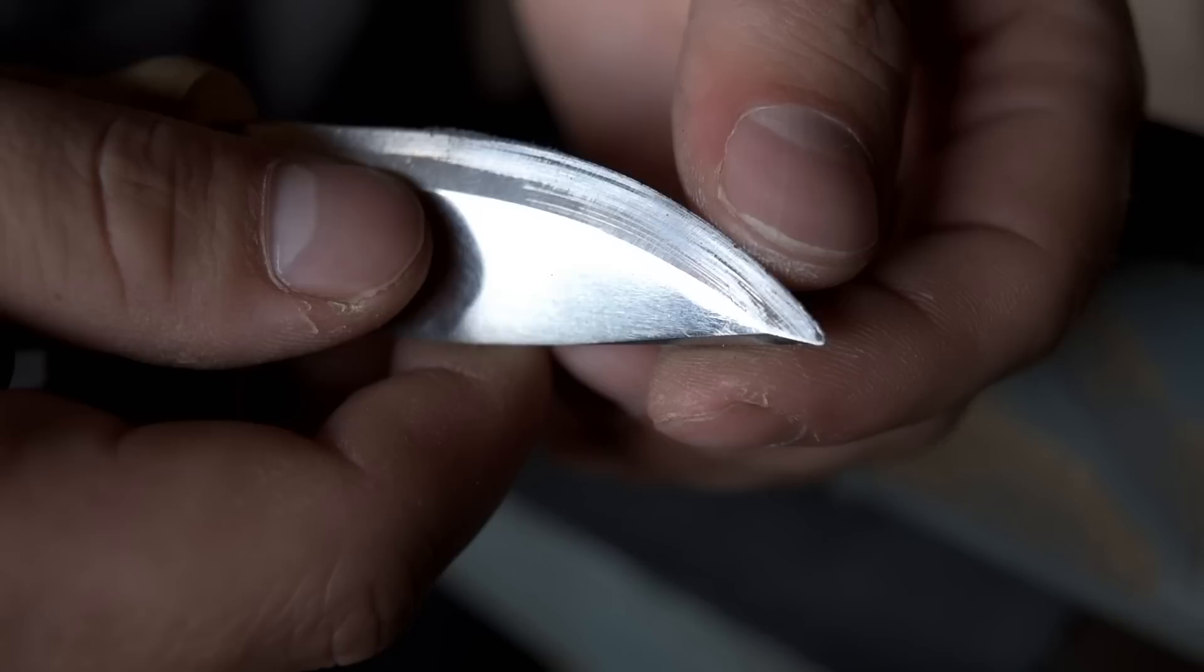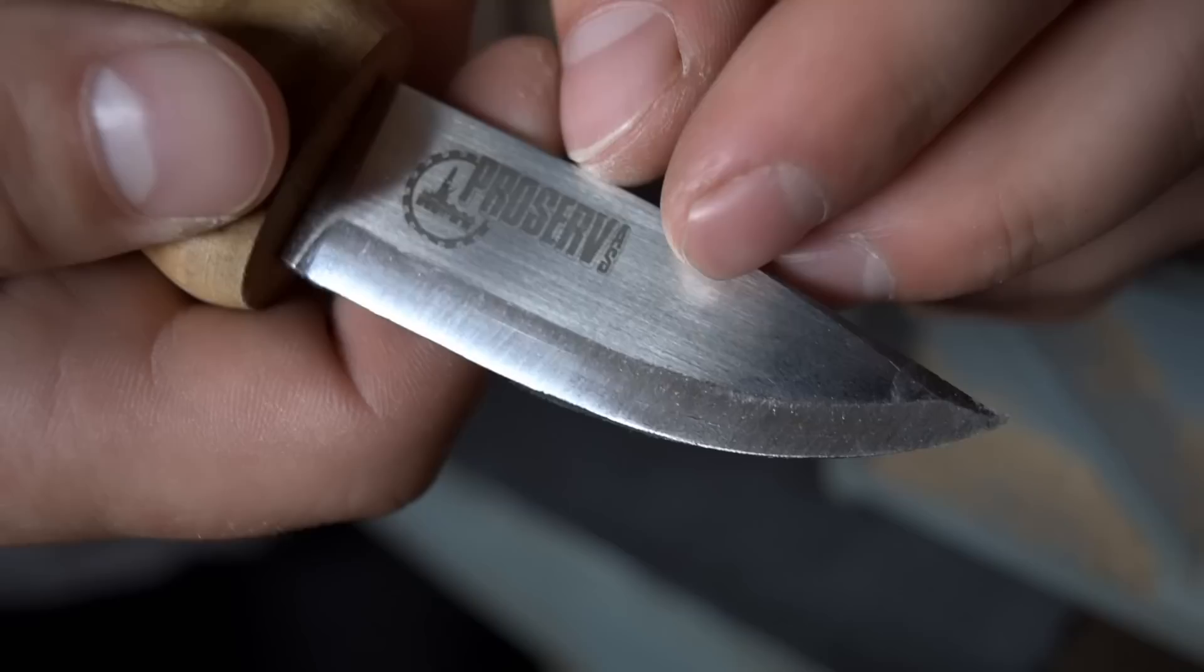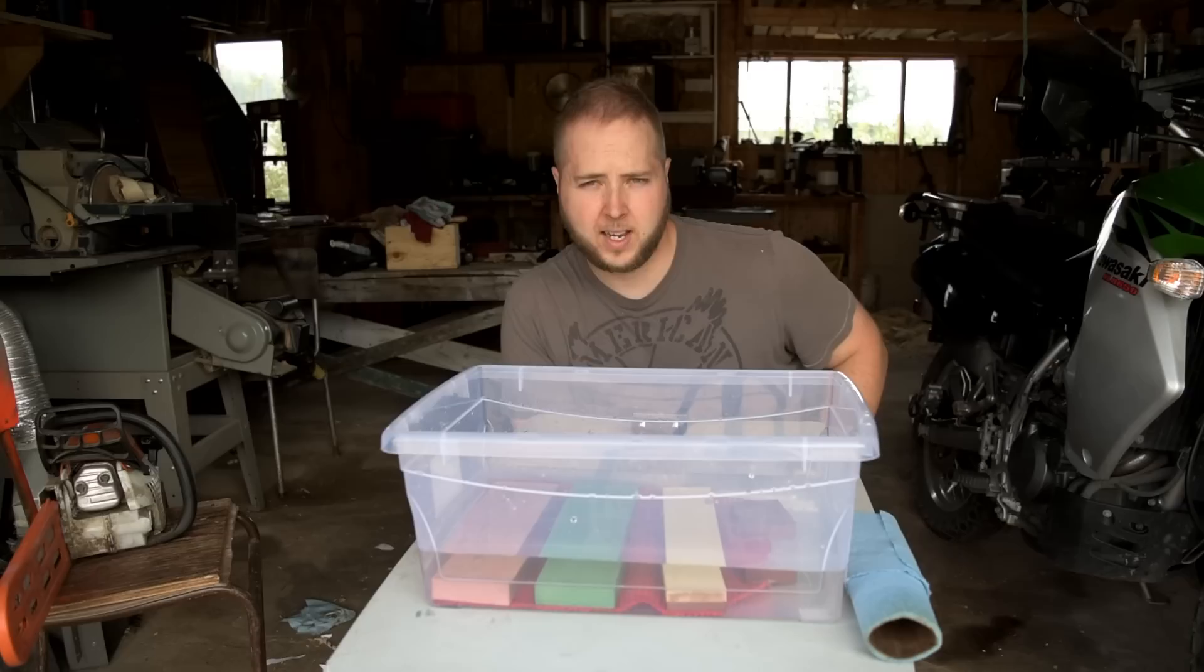This knife also has some bad little nicks in it up around the tip of the knife. You can see right around here, got some bad little chips and nicks. So we'll remove those. And you can see the scratch pattern we're starting to get here now. It's just nice.